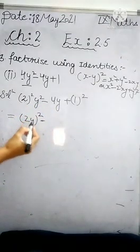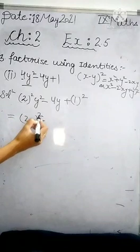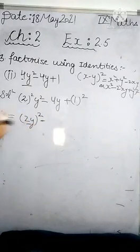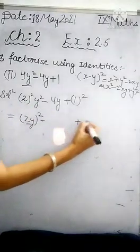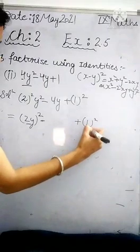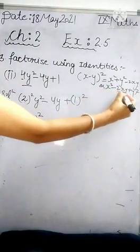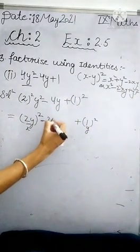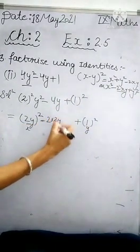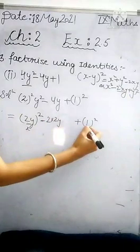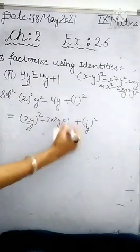So how can we write 4y? You already find that this is (2y)². This 2y is our x and 1 is our y. So here we have minus 2xy. So 2 multiply x is 2y, and y is 1, so multiply 1.